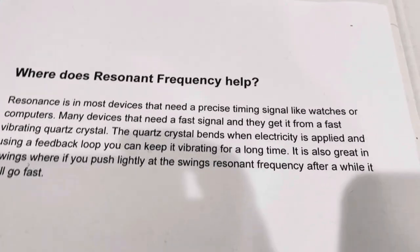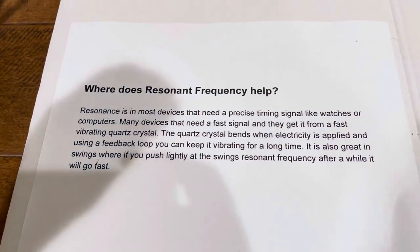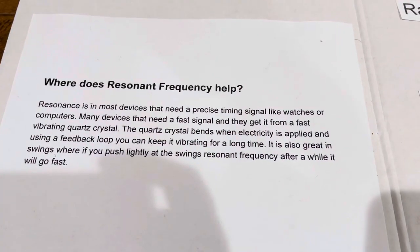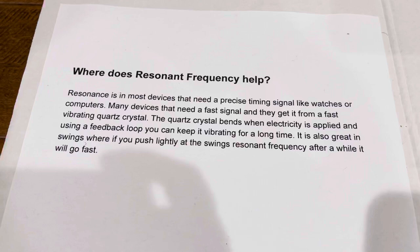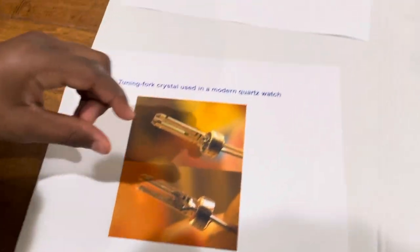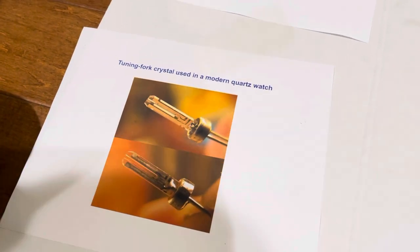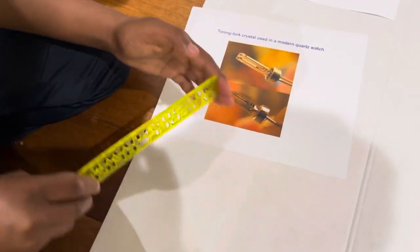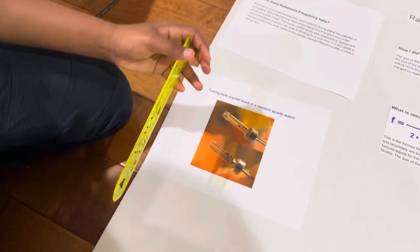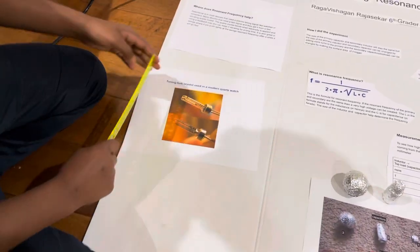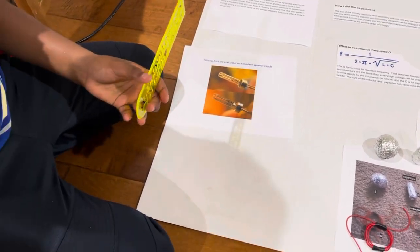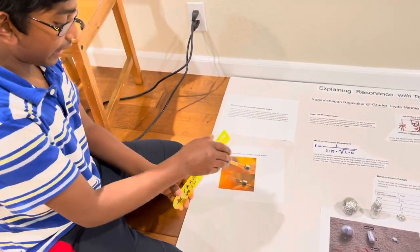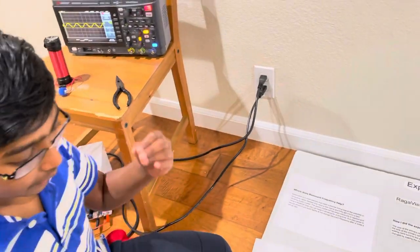How does resonant frequency help us beyond Tesla coils? Resonance is very useful in most devices that need a precise timing signal, such as watches or computers, using a quartz crystal. A quartz crystal is like a tiny tuning fork — it vibrates at a certain frequency, and when it vibrates, it creates electricity across itself. If you feed that electricity into an amplifier and back into the quartz crystal, the crystal bends due to the electricity and keeps vibrating, creating a stable frequency for a computer, watch, or any device that needs one.